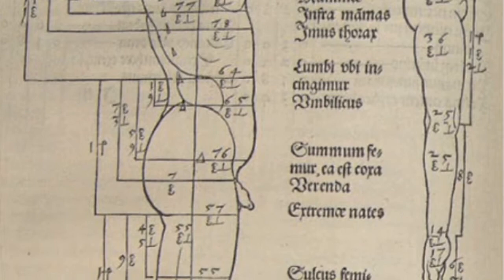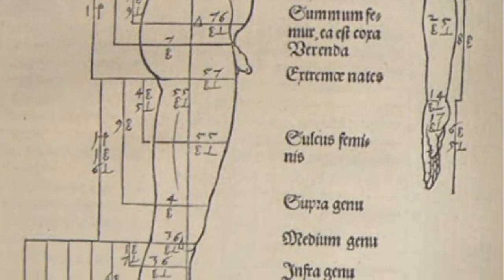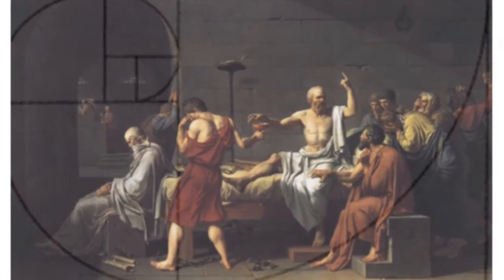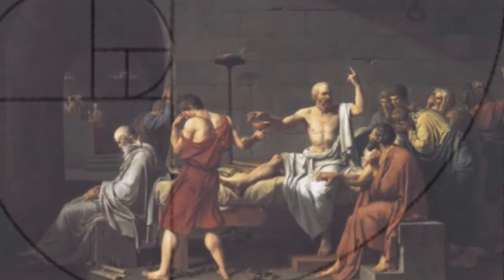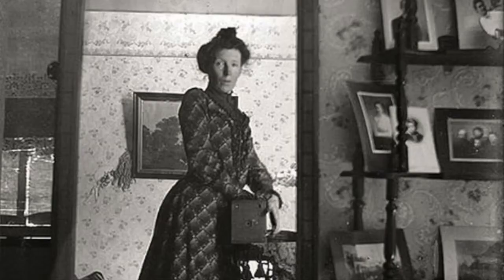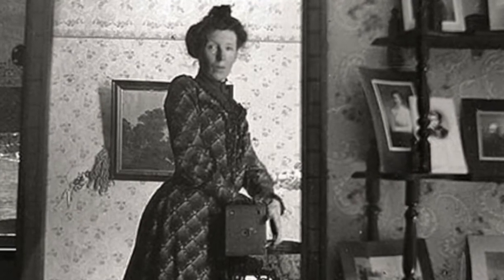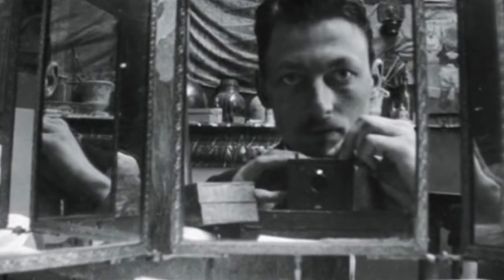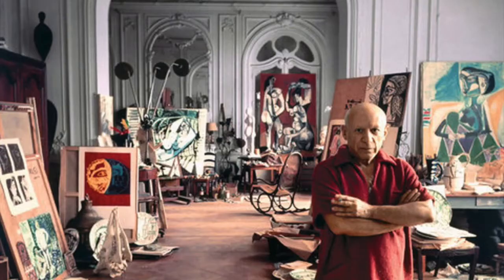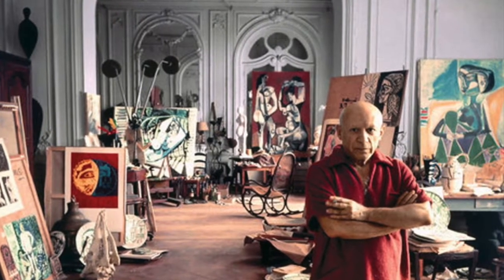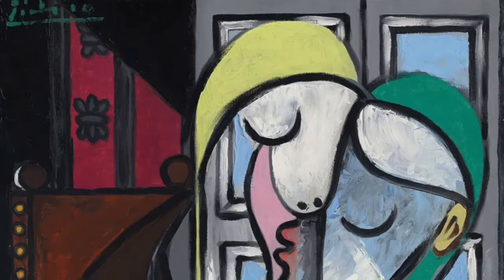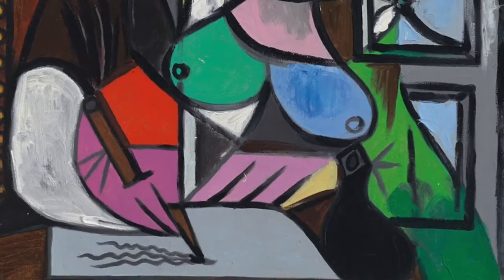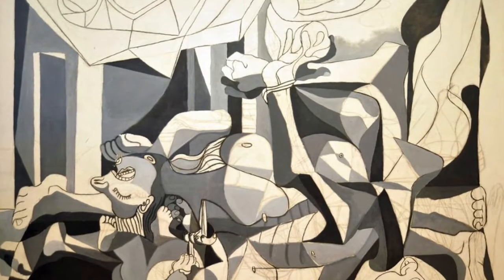Mathematics has continued to play a massive role in how artists frame their pictures throughout the Renaissance, Baroque, Impressionism, and into the early contemporary period at the onset of the 20th century. With the rise of the personal camera, paintings became less concerned with realism and more with interpreting subjects as simply as possible. Pablo Picasso's Cubist paintings were some of the first cases of this.